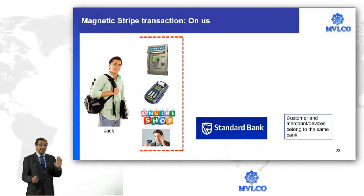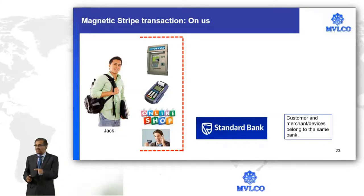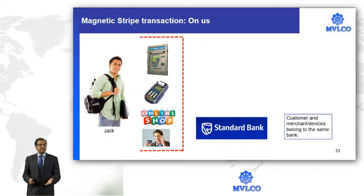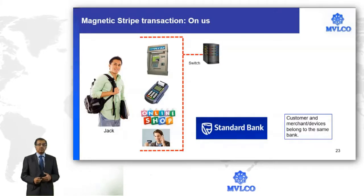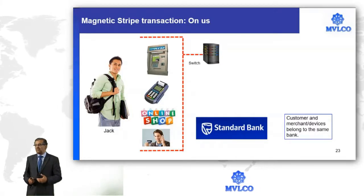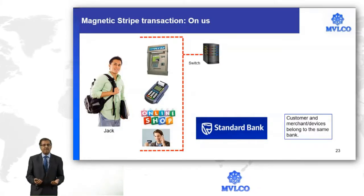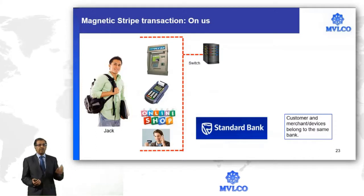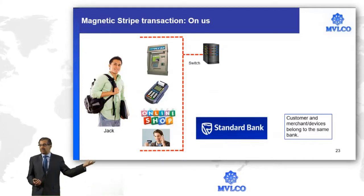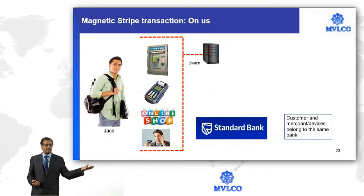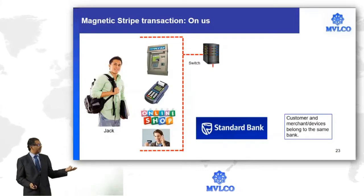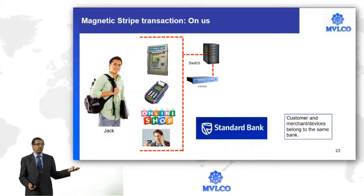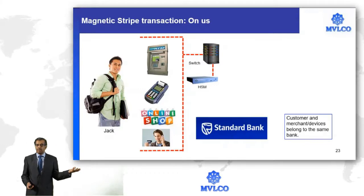Jack swipes the card on any of these four devices. The devices will generate a message and send it to the switch of that particular bank. At the switch, we will do authentication of the cardholder — is this our customer? — and we will do the authentication of the card. We do that by using a mechanism called the host security module.